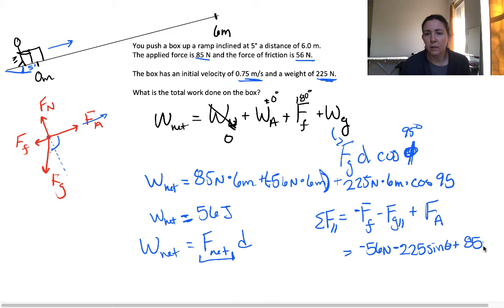We get a net force of approximately 9.4 newtons. We take that net force, and then we plug it right into this, 9.4 newtons times 6 meters gives us a total work of 56 joules. It's the same thing.